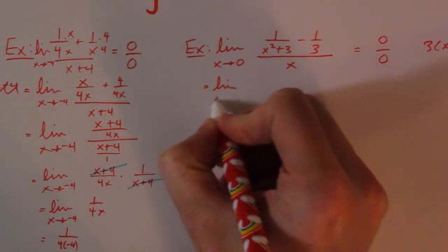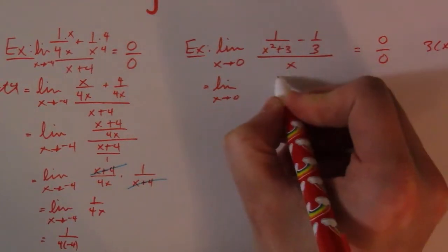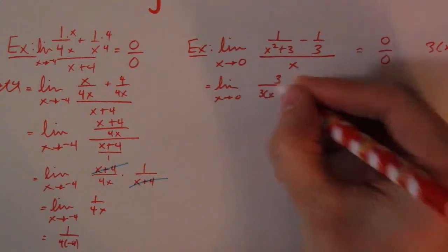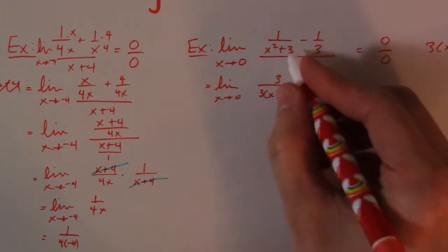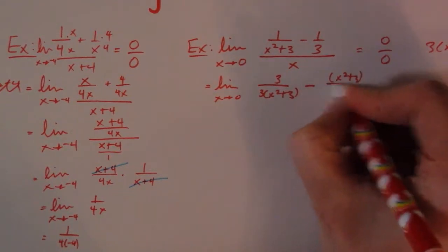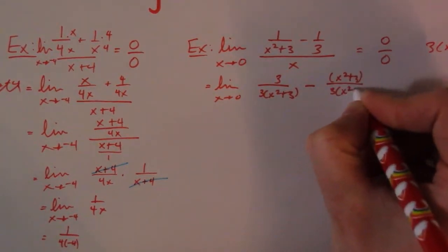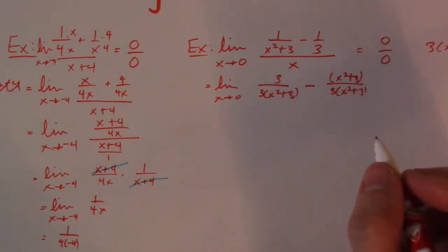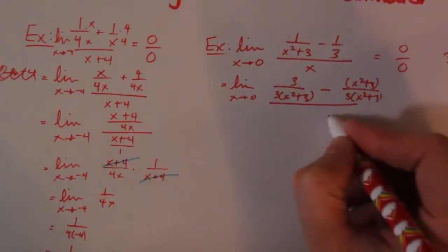So this needs a 3. This needs an x² + 3. So it's going to change to 3 over 3(x² + 3). I multiply this one by 3 over 3, minus, and I'm going to multiply this one by (x² + 3) over (x² + 3). All over x.